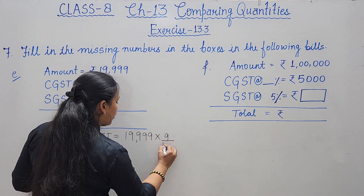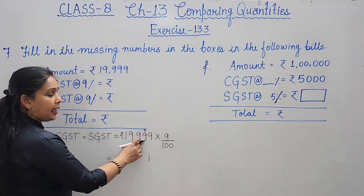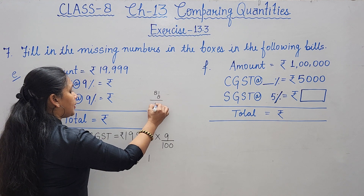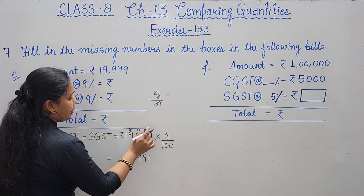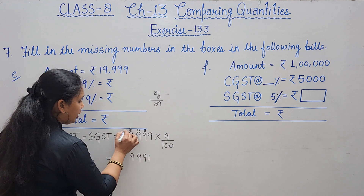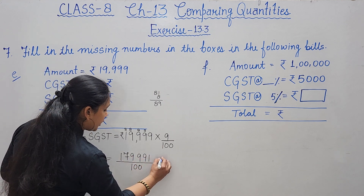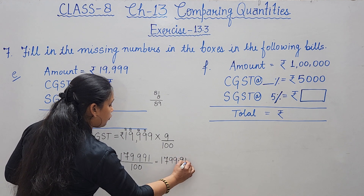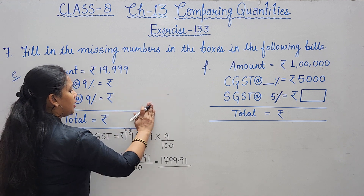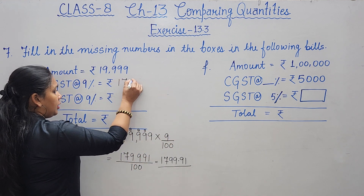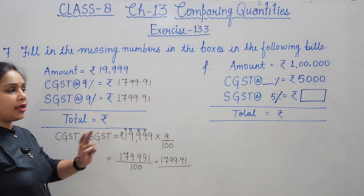Calculating 19,999 × 9 = 1,79,991. Dividing by 100 gives 1799.91. So CGST = rupees 1799.91 and SGST = rupees 1799.91.